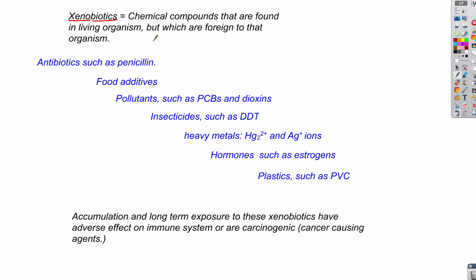Examples of xenobiotics that are not natural and that we might consume through the food chain include: antibiotics such as penicillin, food additives, pollutants such as PCB (polychlorinated biphenyls) and dioxins, insecticides such as DDT which was used extensively in the 1960s, heavy metals such as mercury ion and silver ion, and unwanted hormones such as estrogens — especially problematic for men — and plastics such as polyvinyl chloride (PVC).